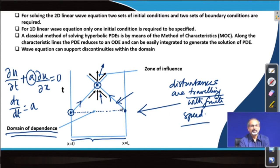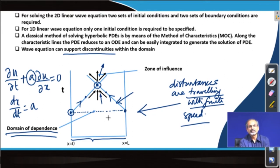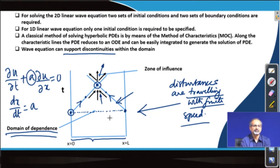Another very important issue is that hyperbolic equations can support discontinuities. Some of these fronts could be carrying information about jump conditions like we see in shock waves. There could be discontinuities existing inside the domain itself which we did not see in the case of elliptic or parabolic partial differential equations. When you model hyperbolic equations using numerical schemes you have to be particularly careful about handling these discontinuities.